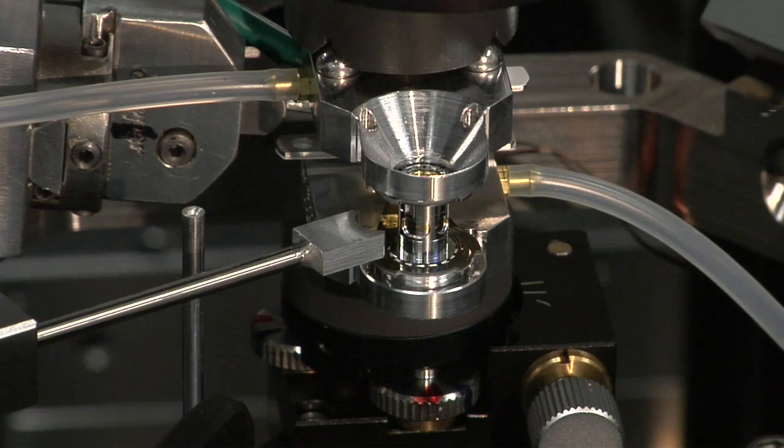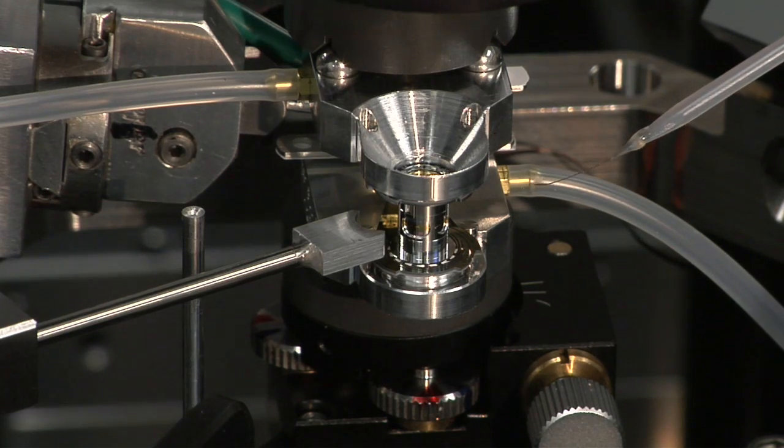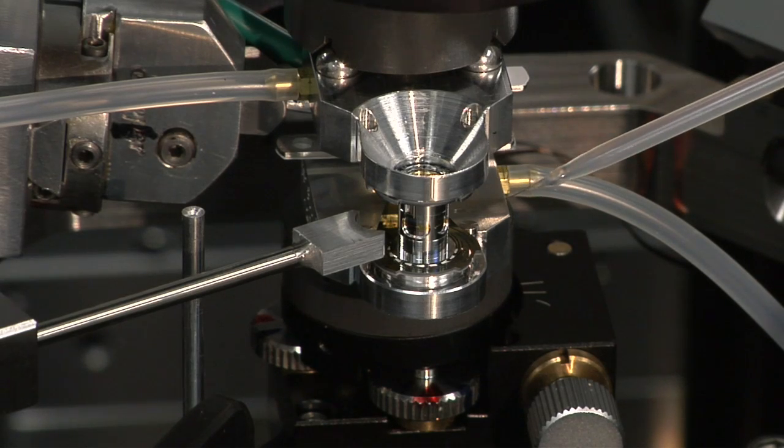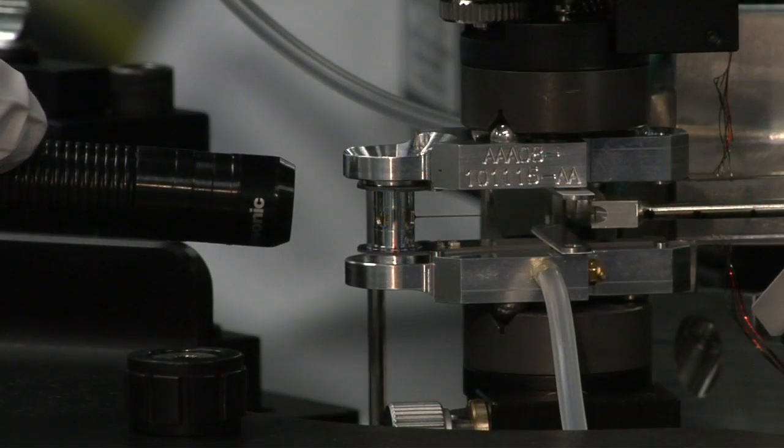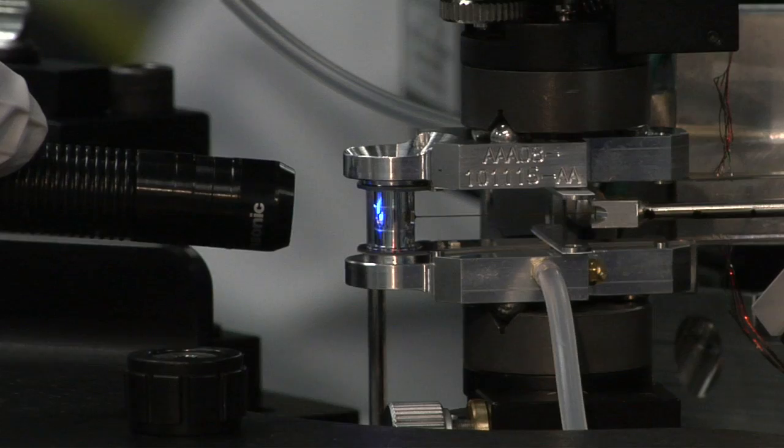Here we see a small drop of epoxy suspended on the end of a hair thin applicator being applied to the target. An ultraviolet light is used to cure the epoxy.